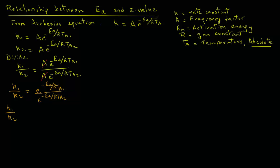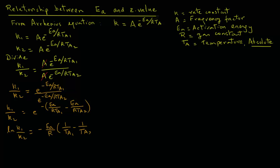We can simplify the right-hand side, and then take the natural log of both sides. So we have natural log of k1 over k2 equals — and since the natural log of e is 1 — minus Ea over R, in parenthesis, 1 over Ta1 minus 1 over Ta2.